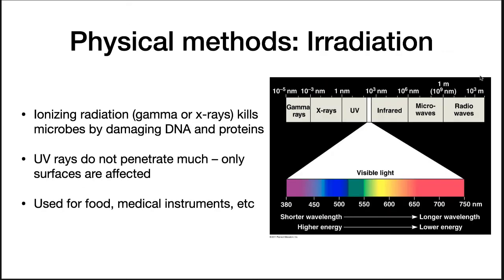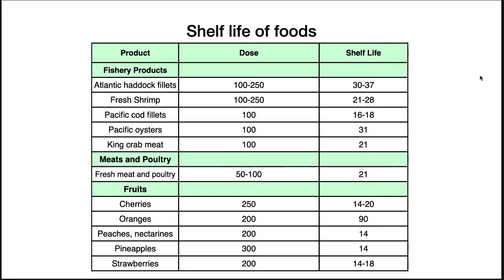Ionizing radiation — the high-energy area of the electromagnetic spectrum, including gamma rays, x-rays, and UV light — is another physical method of control. All of these wavelengths kill microorganisms by damaging DNA and proteins. UV light is the weakest and cannot penetrate deeply, so it is only useful for sterilizing surfaces. The food and medical industries use irradiation to control microbes and increase the shelf life of foods. The amount of radiation used does not alter the food chemically, change food quality, or make the food radioactive. Fish, meats, and fruits are examples of food products treated with irradiation.